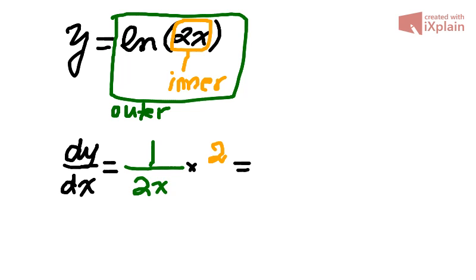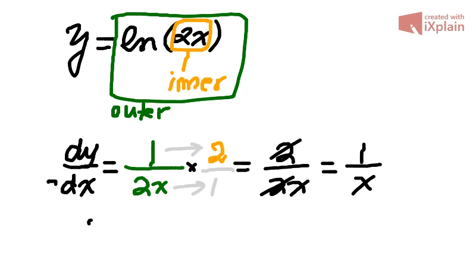Then we need to just simplify this. Multiply top by top and bottom by bottom. So we have 2 over 2x. Simplify it a bit further and we have 1 over x. So that means the derivative of ln 2x is 1 over x.